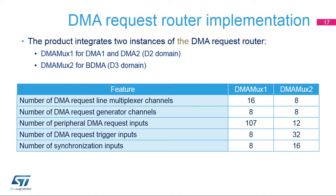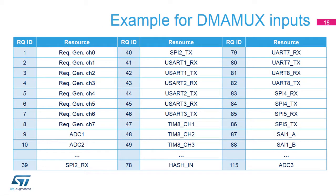The STM32H7 integrates two instances of the DMA request router: DMA MUX 1 for DMA1 and DMA2 in the D2 domain, and DMA MUX 2 for BDMA in the D3 domain. This is an example for DMA MUX inputs. For a detailed list of DMA MUX inputs, synchronization events, and request generator triggers, please refer to the STM32H7 reference manual.